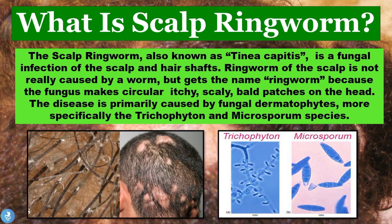The ringworm of the scalp is not really caused by a worm, but gets the name ringworm because the fungus actually makes circular, itchy, scaly and bald patches on the head. The disease is primarily caused by fungal dermatophytes, more specifically the trichophyton species and the microsporum species.